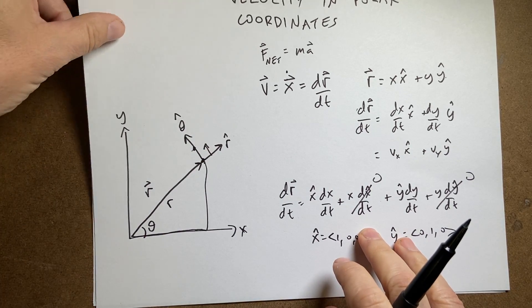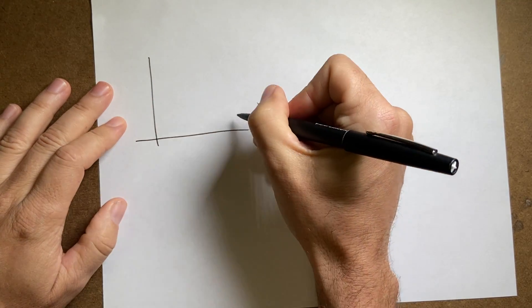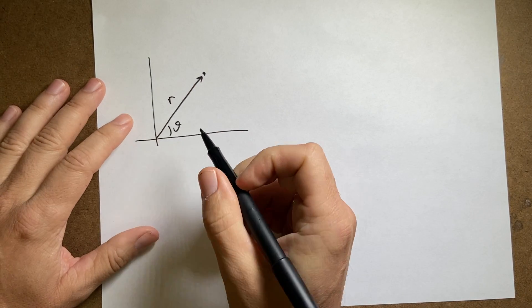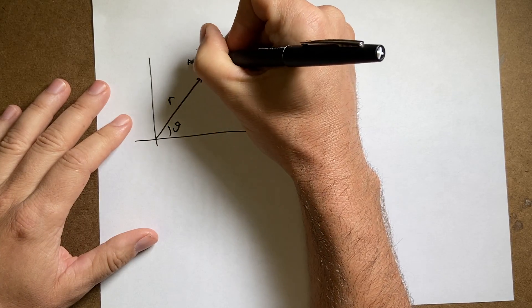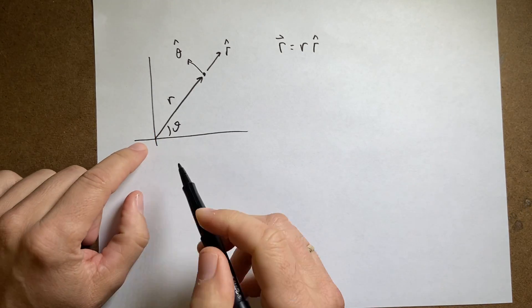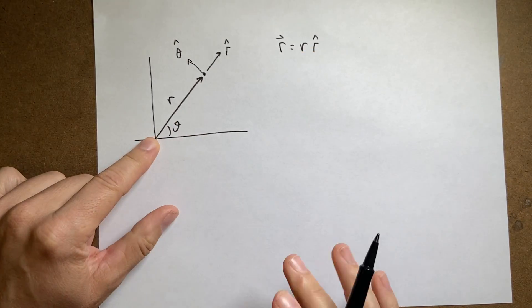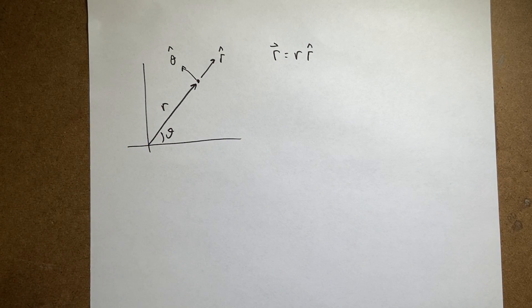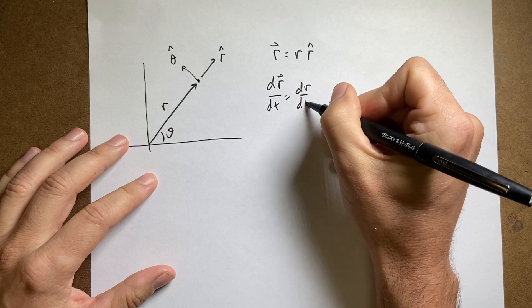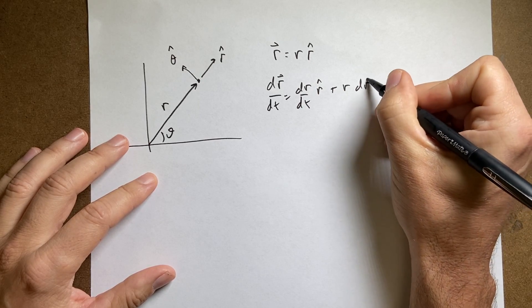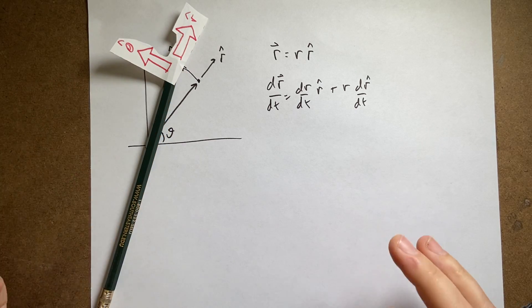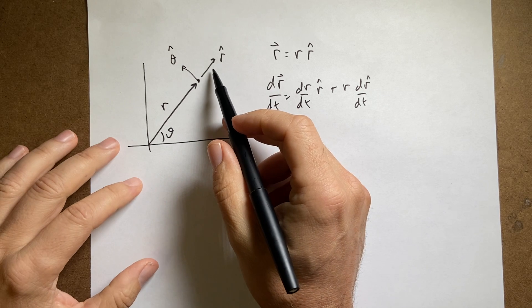So let's do polar coordinates. Here's my picture again — there's my object, the scalar theta, and the scalar r (not the vector r), and the unit vectors r_hat and theta_hat. The position vector r is simply r * r_hat: this distance in that direction. Taking the derivative, dr/dt = dr/dt * r_hat + r * d(r_hat)/dt. As the object moves, r_hat changes direction, so I need to know how r_hat changes with time, and taking the derivative of a unit vector is tricky.